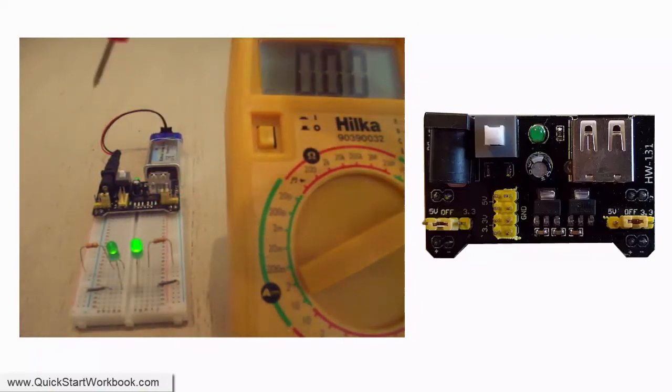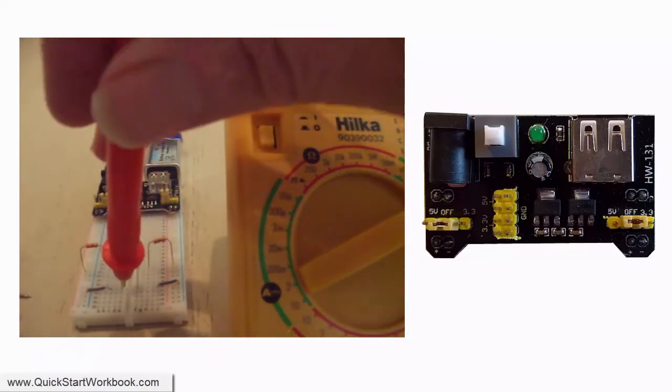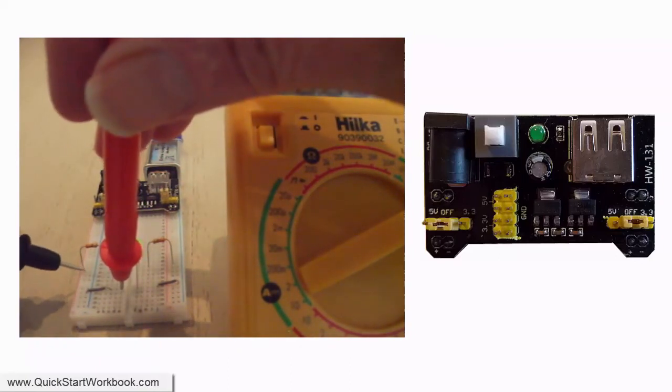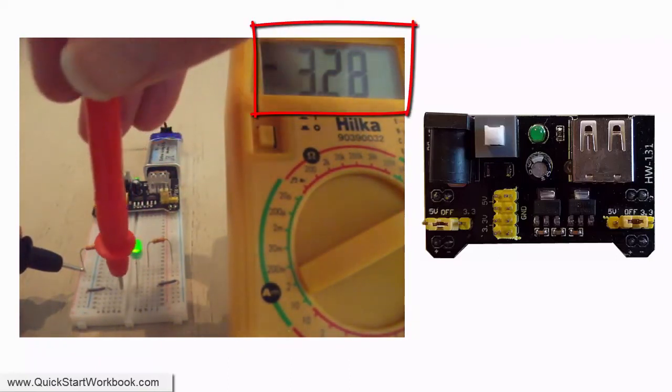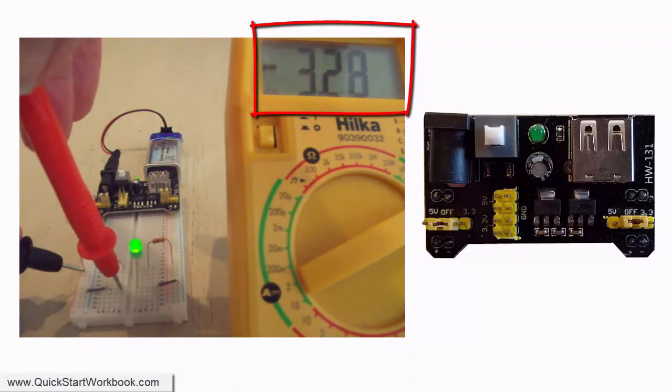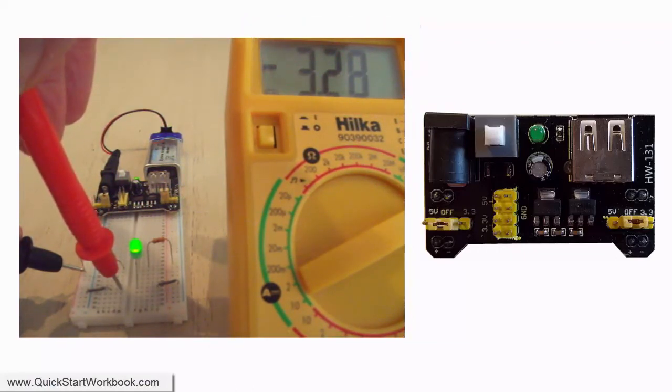So, let's check the voltage level for the other LED. 3.28 volts. Not bad. It's only slightly down on the 3.3 volts we should be getting.